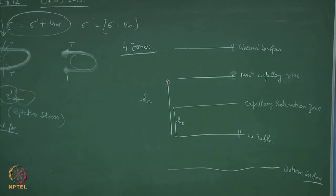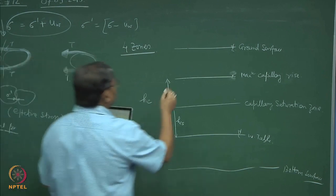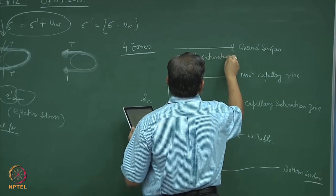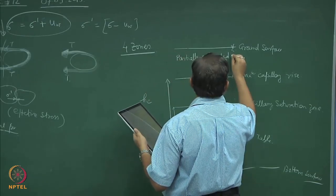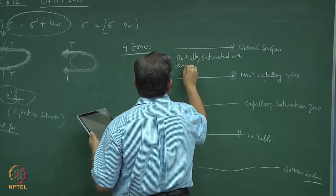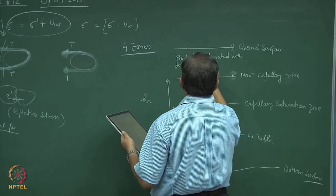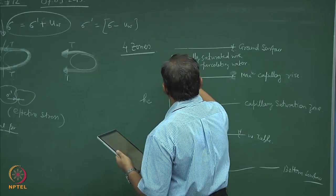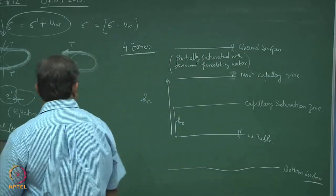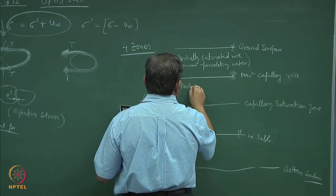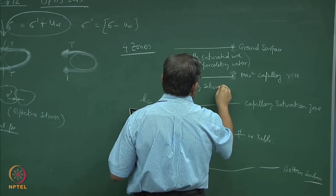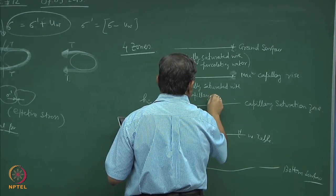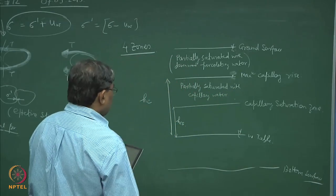I will write it down and you might use this information. This zone is partially saturated with downward percolating water. This is partially saturated with capillary water. This is saturated with capillary water.